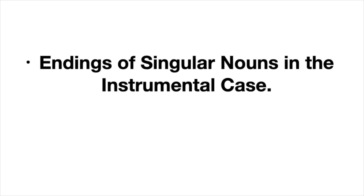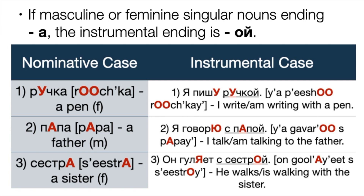Endings of singular nouns in the instrumental case. If masculine or feminine singular nouns end in -а, the instrumental ending is -ой. Number one: ручка — feminine noun → ручкой. Example: Я пишу ручкой — I write with a pen. Number two: папа — masculine noun → папой. Example: Я говорю с папой — I talk to the father. Number three: сестра — feminine noun. Example: Он гуляет с сестрой — He walks with a sister.